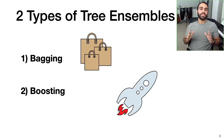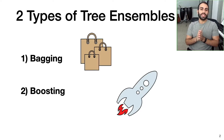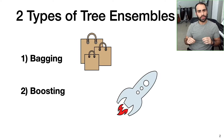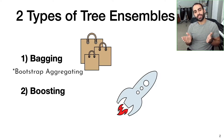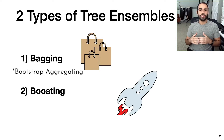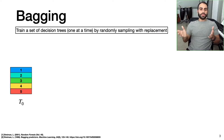I'm going to talk about two different types of decision tree ensembles. The first one is bagging, which is short for bootstrapped aggregation. And then the second one is called boosting, which isn't short for anything.